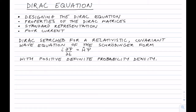Dirac was searching for a relativistically covariant wave equation which had the same form as the Schrödinger equation, i d psi/dt equals H psi, and he wanted it to have a positive definite probability density. That's because at the time the charge density interpretation of the Klein-Gordon equation was not known, and the pi-plus pi-minus mesons — charge spin-zero particles — had not yet been discovered.